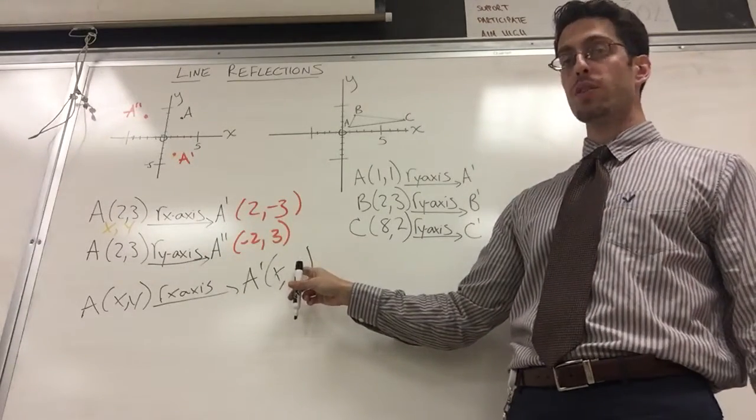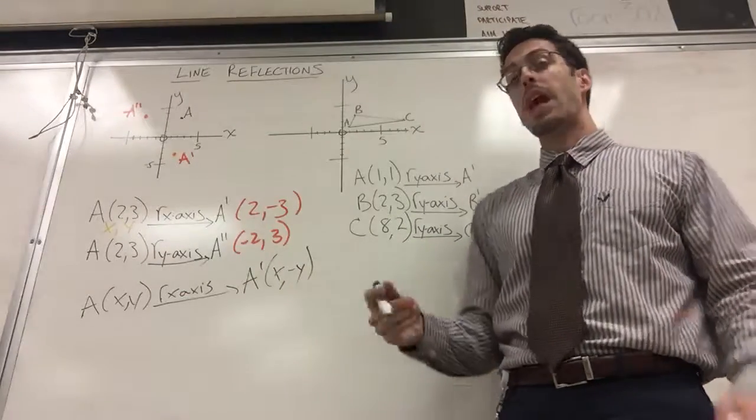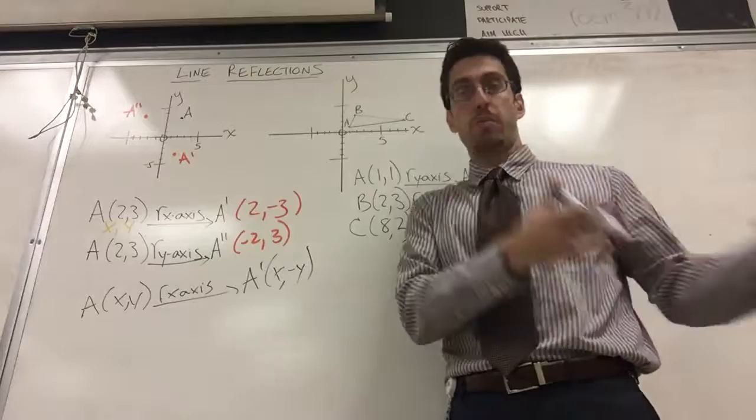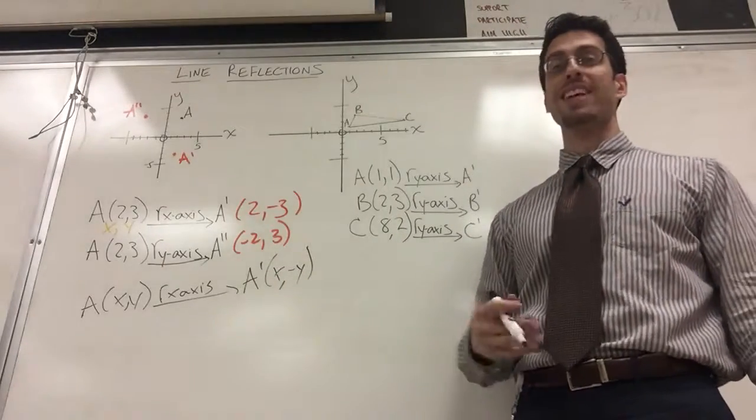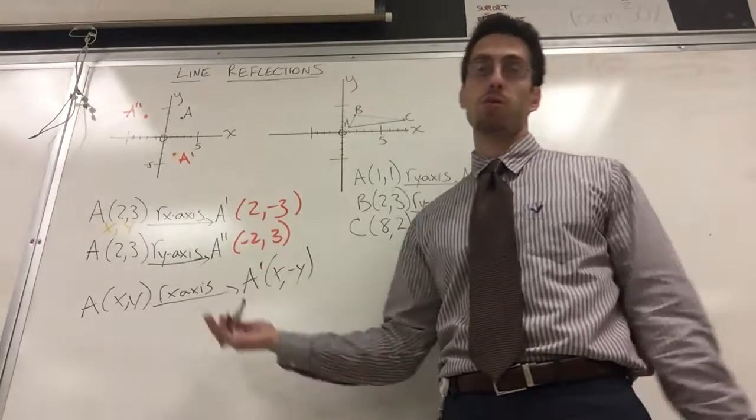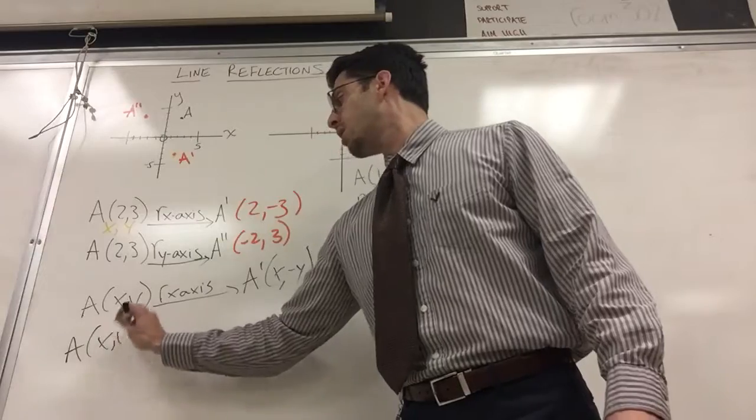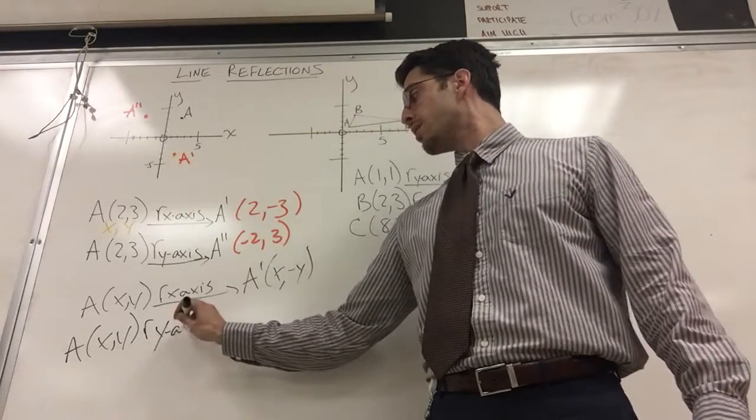So the sign for y is going to change. If it was positive it becomes negative y. If it happened to start off as negative it would become positive. So there's my rule for reflection in the x-axis. I never need to graph it now as long as I remember that rule. If you forget the rule, graph it.